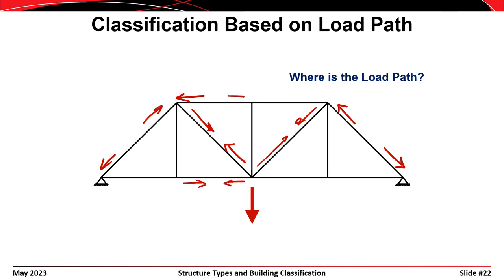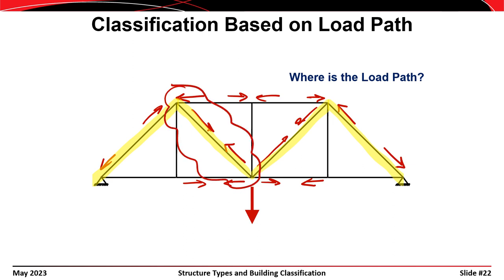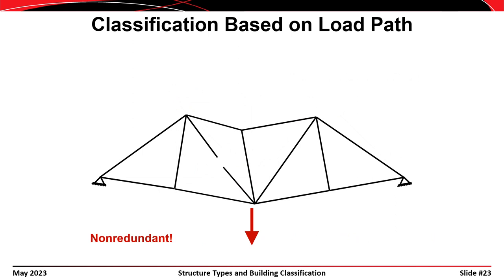The primary load path travels through those members, and the other members are there to provide equilibrium. If one of those diagonal members fractures, the structure actually fails — because there is only one load path in this structure, and losing one of those members makes the structure unstable. This type of structure is called non-redundant because there is no secondary load path in the event of failure of a member in the primary load path.